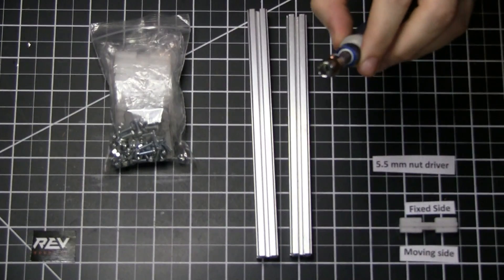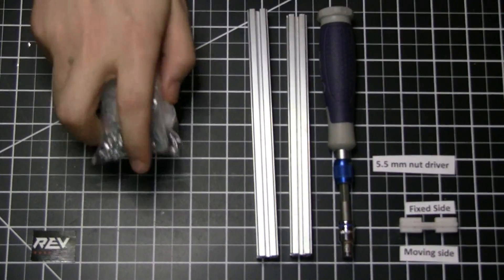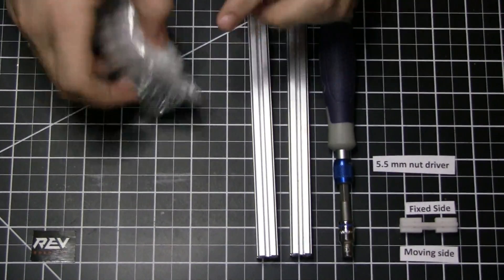What you'll need is a five and a half millimeter nut driver or socket set on the end of a screwdriver, your linear motion kit, and a couple of the REV robotics 15 millimeter rails.